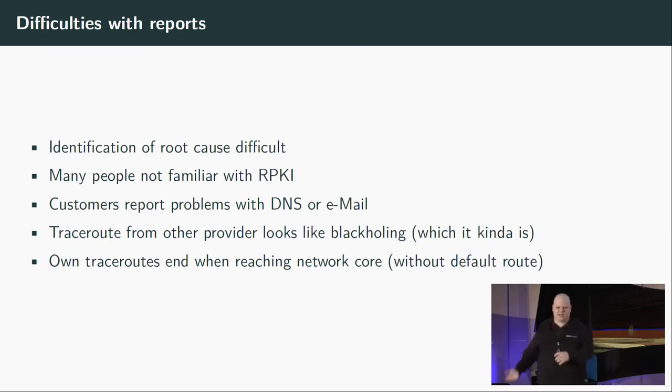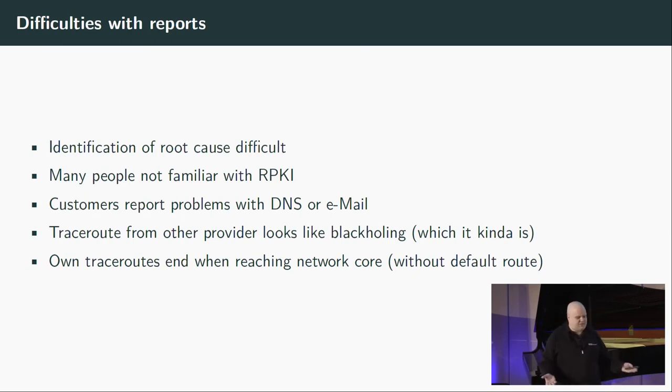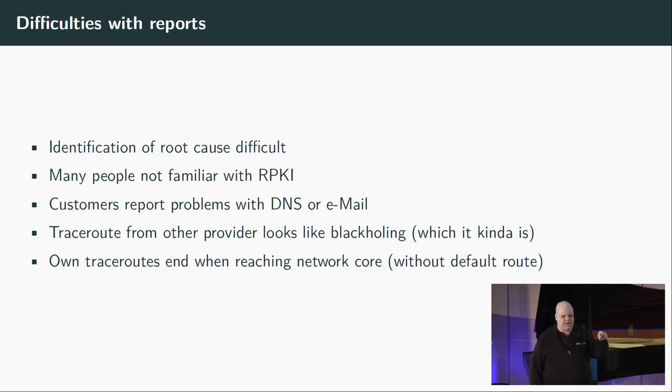You need to be able to collect these reports and react in the right way — tell people their prefix is invalid. We got traceroutes from so many other providers, and everyone looks like we are blackholing stuff, which essentially we are, because they have no route back from us. The traceroute goes through until the last hop and after that comes our network — blank. And they say you're blackholing our traffic. And it's like, yeah, kinda, but not really, because we didn't do it — you did it yourself because you had an invalid prefix.